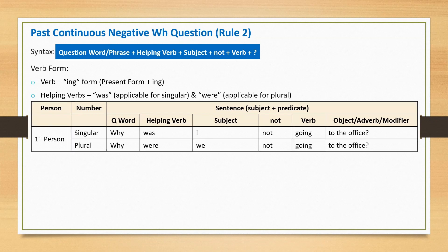First person singular: Why was I not going to the office? This sentence starts with question word 'why', followed by helping verb 'was', subject 'I', negative word 'not', main verb 'going', and question mark at the end.